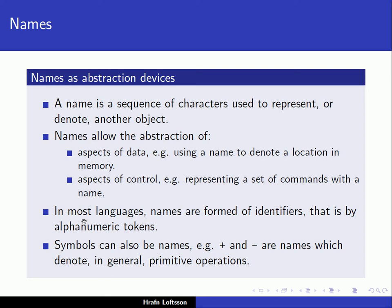In most languages, names are formed by identifiers — that is, by alphanumeric tokens. We use alphanumeric characters like A, B, C and numbers 1, 2, 3. But symbols can also be names. For example, plus and minus are names which denote primitive operations.